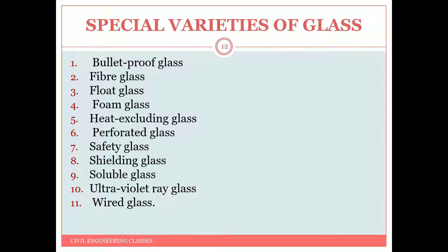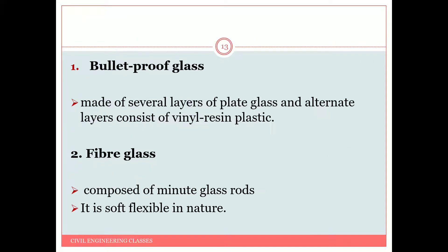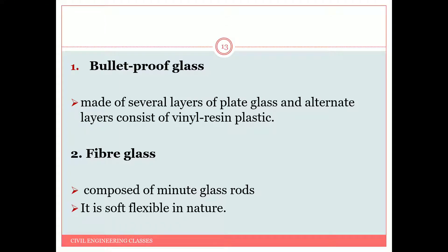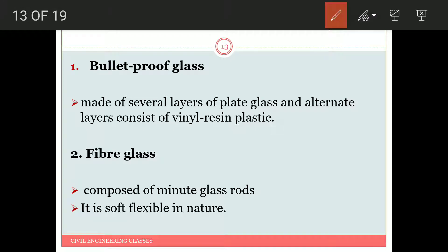There are also certain special varieties of glass. By adding a few more ingredients we can alter the properties of glass suitably. These special varieties have their own special uses in engineering. Bulletproof glass is made up of several layers of plate glass with alternate layers of vinyl resin plastic.